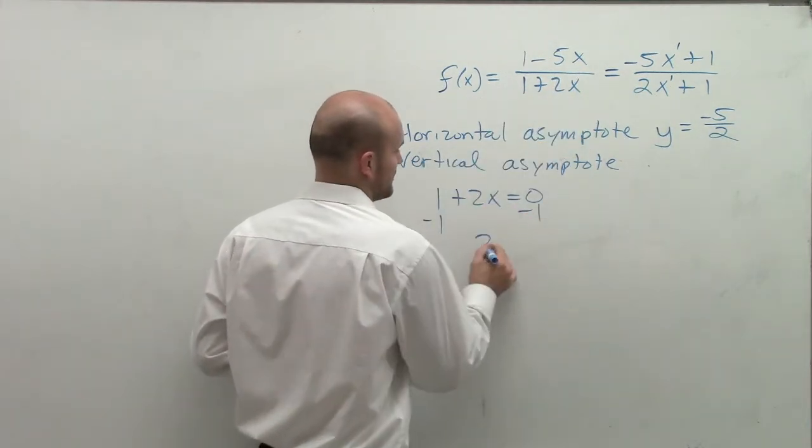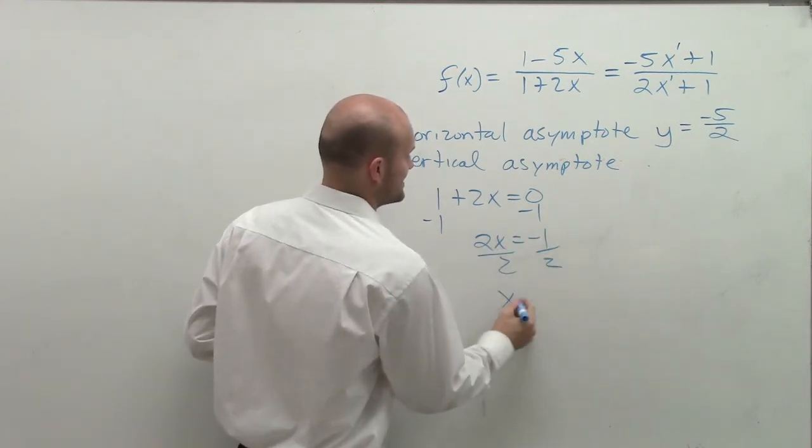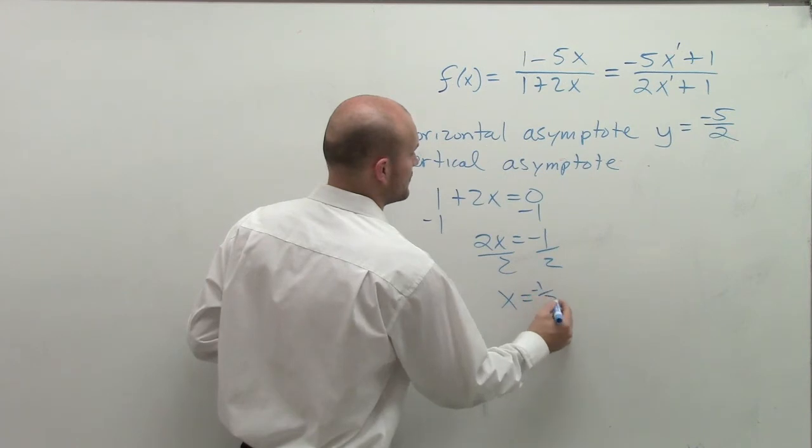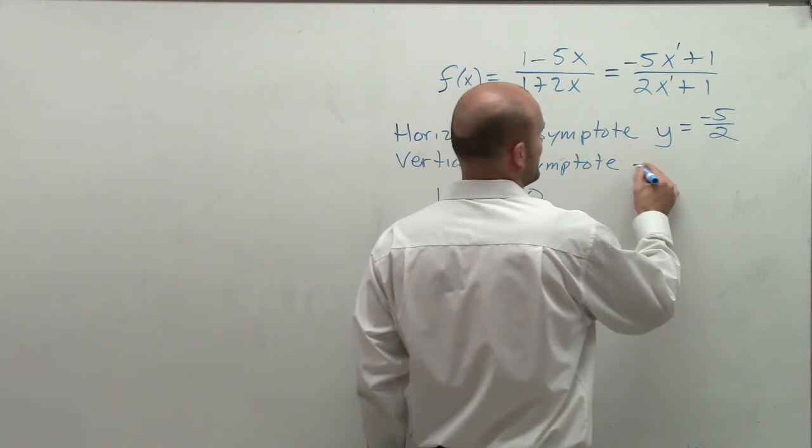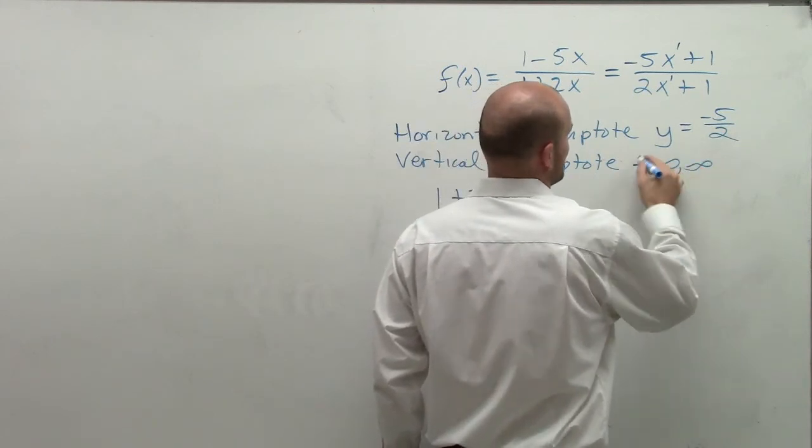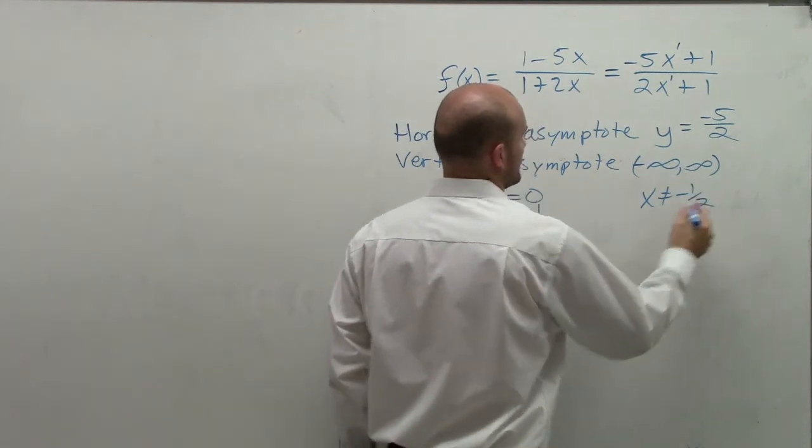So I solve. x equals negative 1 half. So therefore, my vertical asymptote is going to be from negative infinity to infinity. However, x cannot equal negative 1 half.